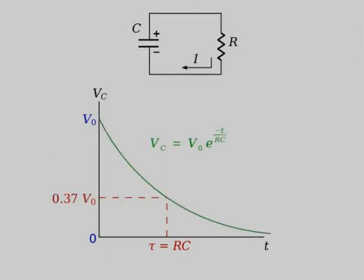If you start with a charged capacitor and then discharge it through a resistor, as current flows, positive charge leaves the top plate, the voltage across the capacitor drops, and the current decreases proportionally. The result is exponential decay: V_C(t) = V₀ · e^(−t/RC). The time constant RC now tells you how long it takes to decay to 37% of the starting voltage.